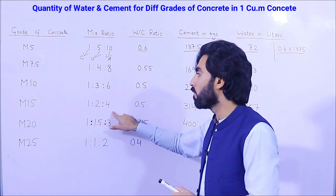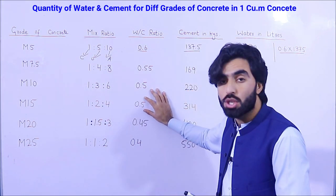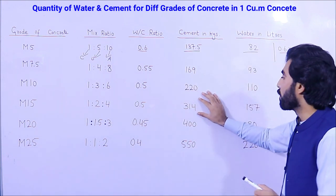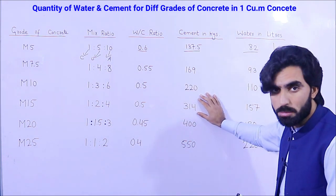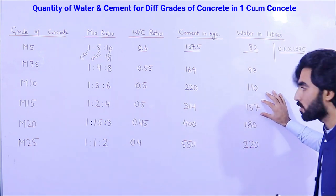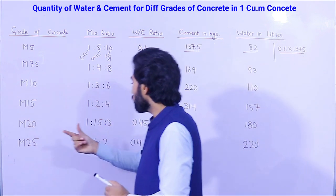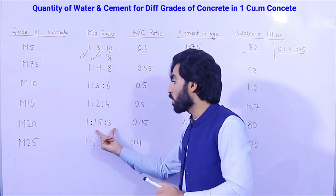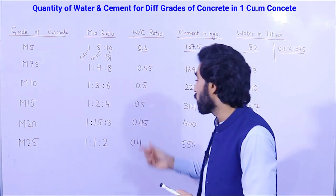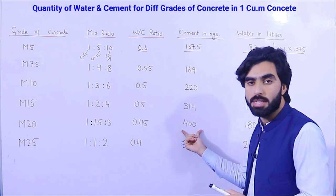For M15 grade concrete, the mix ratio is 1:2:4 with a water-cement ratio of 0.5. You will require 314 kg of cement and 157 liters of water per cubic meter.